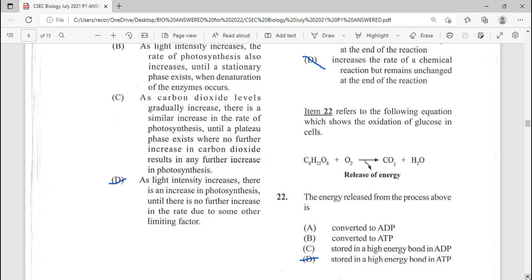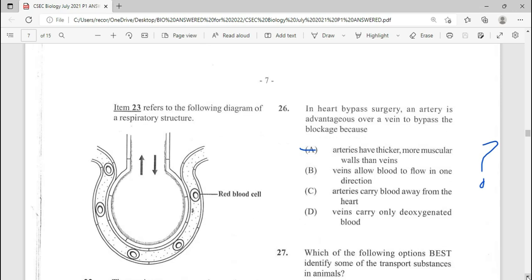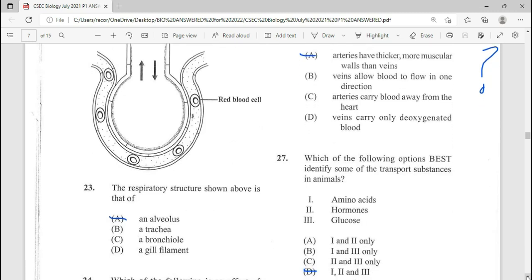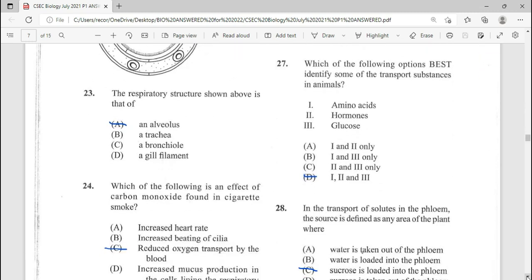Item 22 refers to the following equation, which shows the oxidation of glucose in cells, release of energy. Now, the energy release from the process above, stored in high energy bonds in ATP. Easy answer here is your answer there.